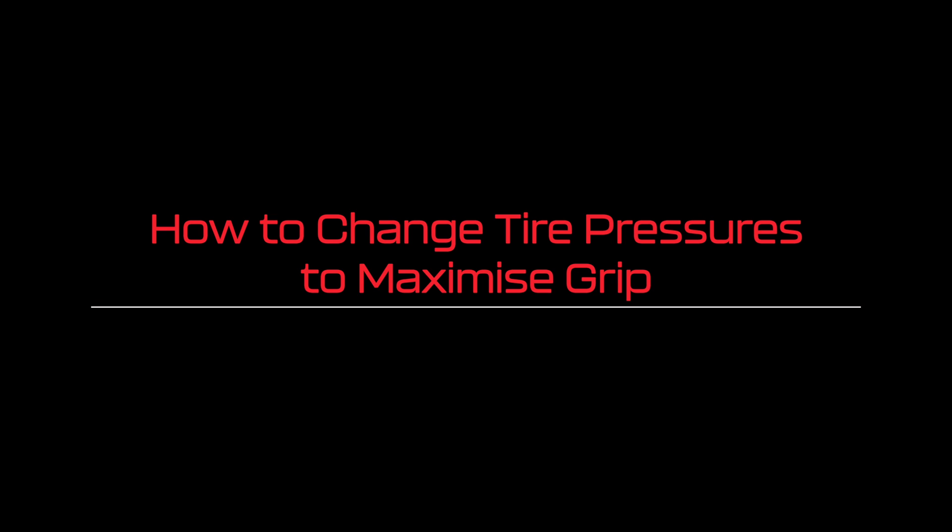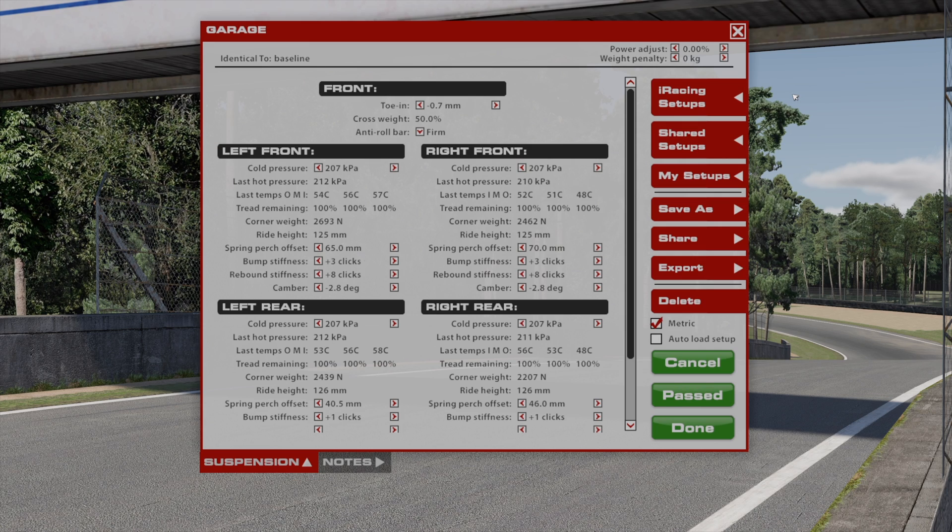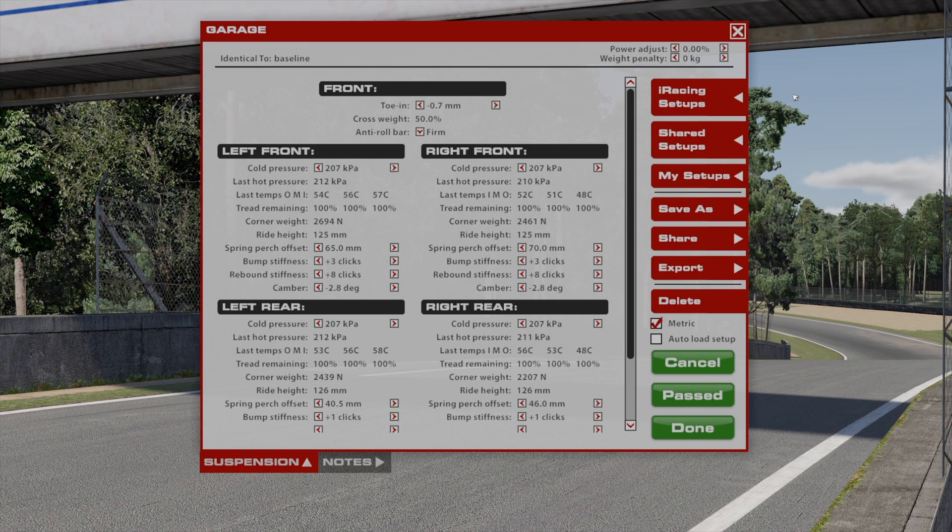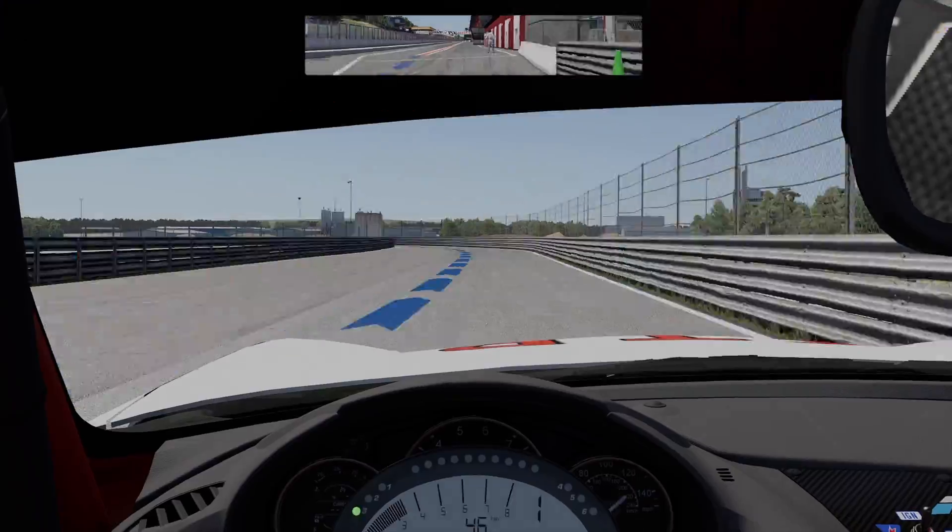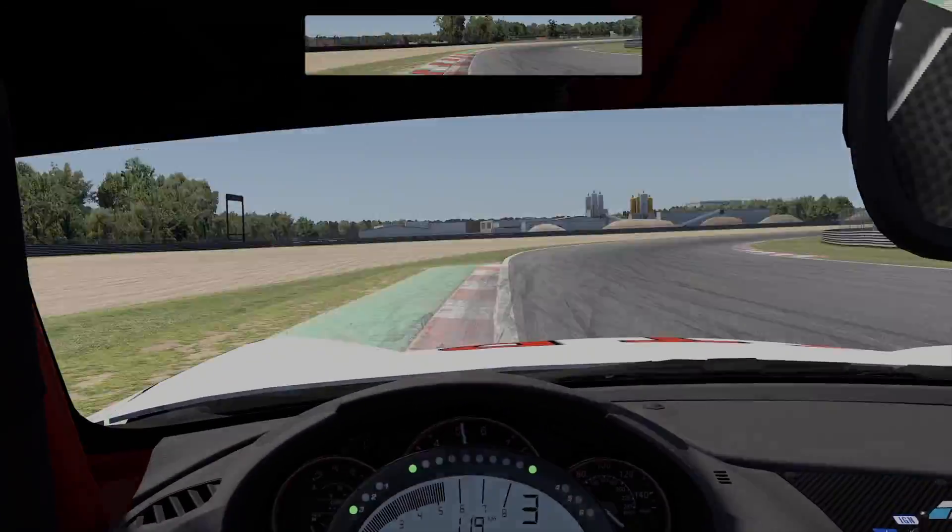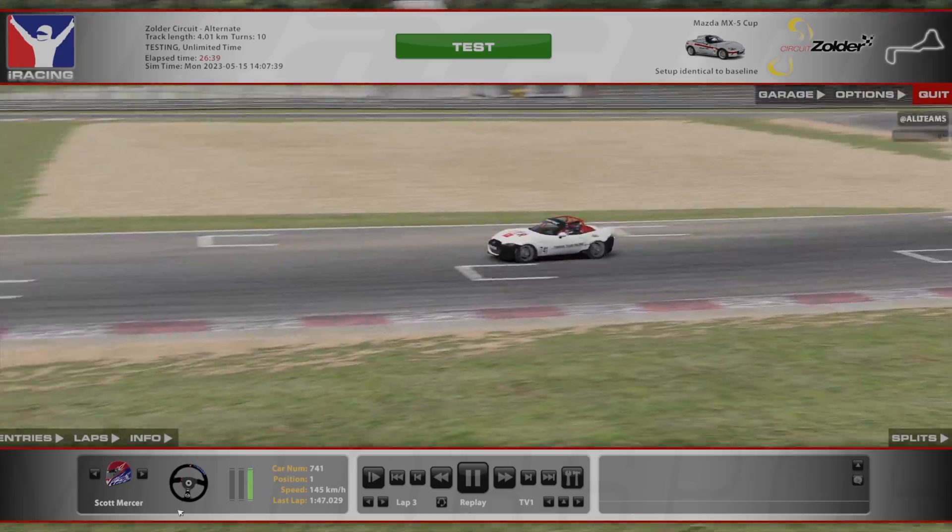So how do we start tweaking those tire pressures to maximize our level of grip? To start tweaking your tire pressures, we're going to need to follow some simple steps. Number one, start with cold pressures recommended by either the tire manufacturer or in the simulator's default setup. Here we're in iRacing and we've headed into the garage where we can see the cold pressures, or the default tire pressures, upon commencement of this practice session. Now you want to head into the practice session and do a few laps to warm up the tires. When the car comes off the track, you want to head back into the garage and measure the hot pressures.